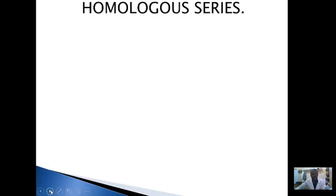Today we will be looking at a homologous series. I will be interested to know what is a homologous series, what are the properties of a homologous series, the functional groups — alkanes, alkenes, alkynes, alcohol, carboxylic acid, aldehyde, acid anhydride, nitro compounds, and amino acids. All these are different homologous series.